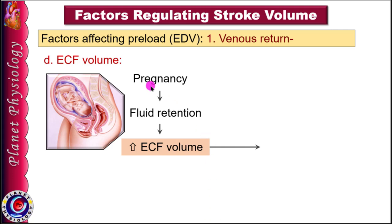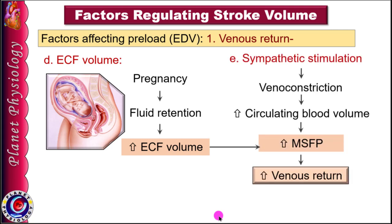For example, during pregnancy, extracellular fluid volume increases due to fluid retention. In case of sympathetic stimulation, venoconstriction increases circulating blood volume, leading to increase in mean systemic filling pressure and hence venous return.